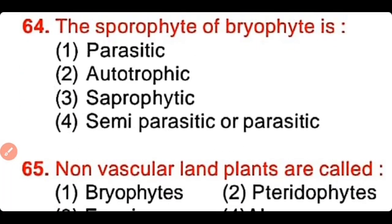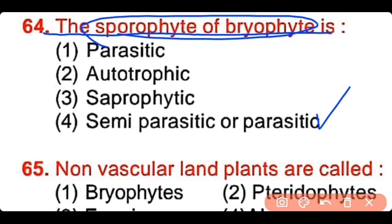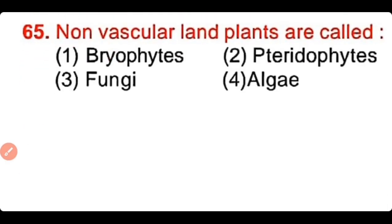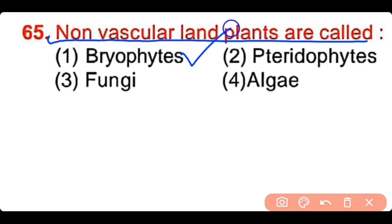Question number 64: The sporophyte of bryophytes is parasitic, autotrophic, saprophytic, or semi-parasitic. The correct answer is option 4. The sporophyte of bryophytes is semi-parasitic because it is dependent on the gametophyte for food. Question number 65: The non-vascular land plants are called bryophytes. The correct answer is option 1.